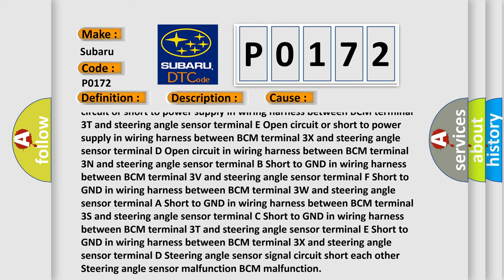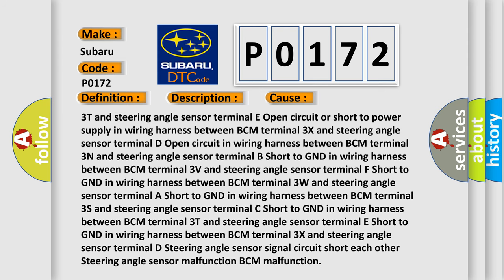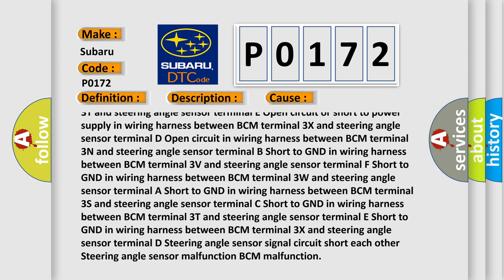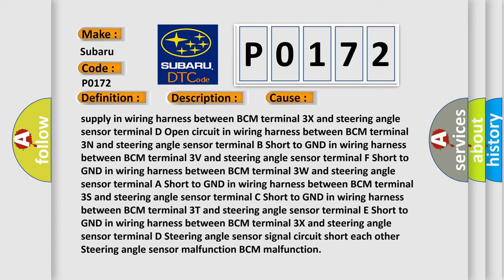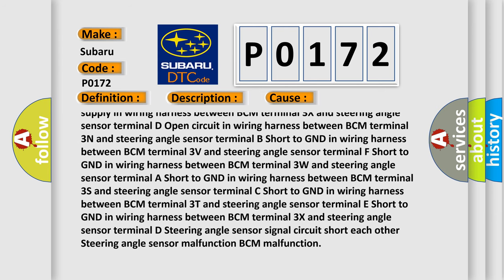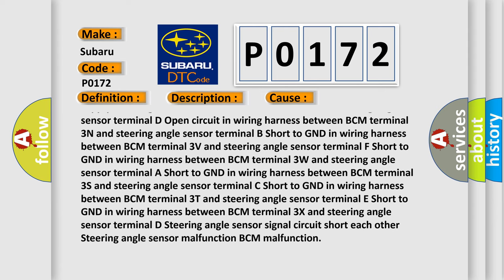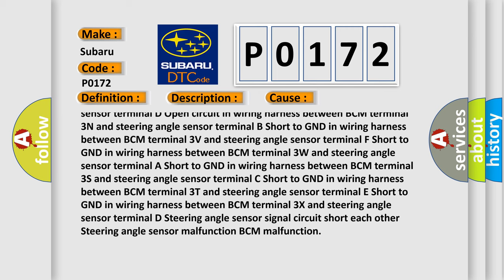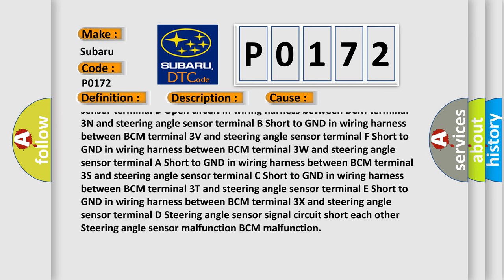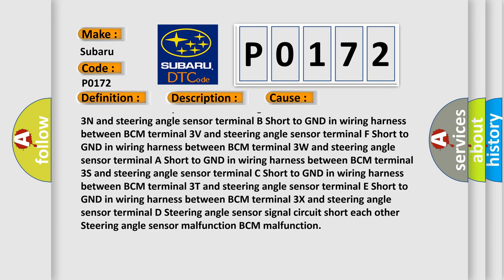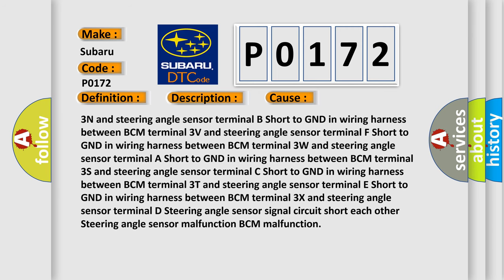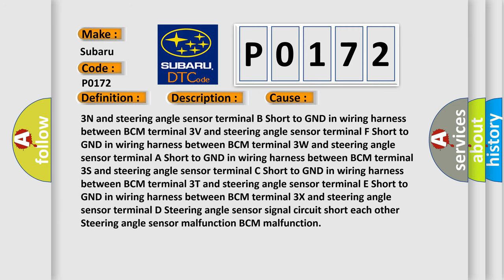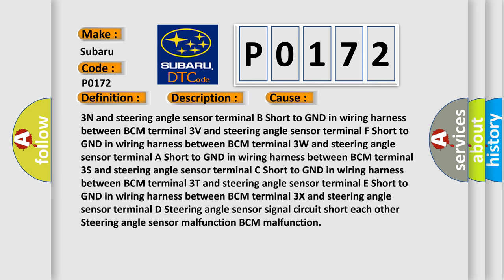Short to GND in wiring harness between BCM terminal 3N and steering angle sensor terminal B; BCM terminal 3V and terminal F; BCM terminal 3W and terminal A; BCM terminal 3S and terminal C; BCM terminal 3T and terminal E; BCM terminal 3X and terminal D. Additional causes include: Steering Angle Sensor Signal Circuit short to each other, Steering Angle Sensor Malfunction, and BCM Malfunction.